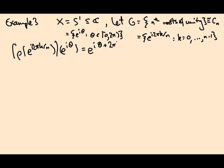So the action is just going to be ρ of e to the i 2π k over n, and then acting on e to the iθ, is going to be e to the i(θ + 2π k/n). It's continuous and it's a homeomorphism as you can check.